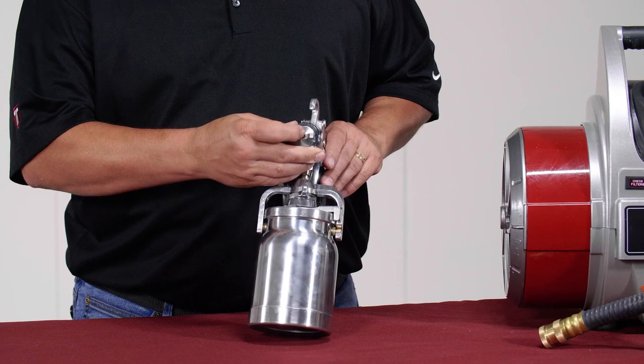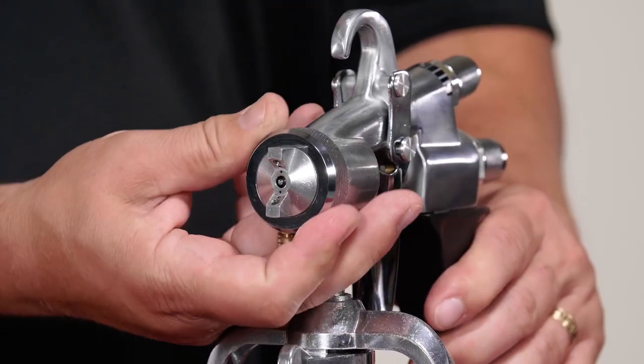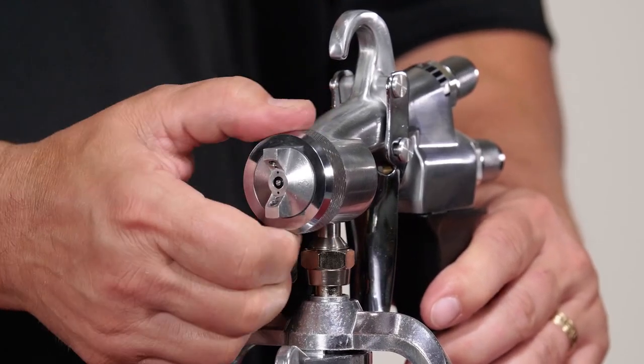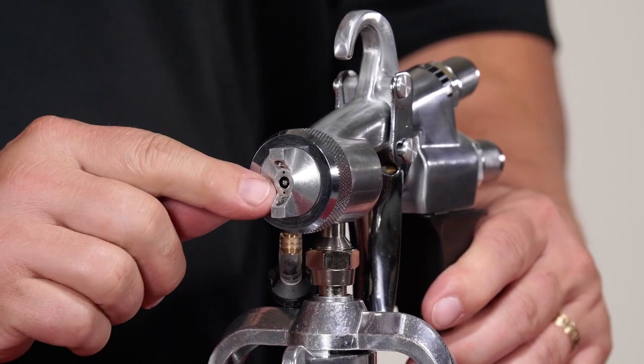The air cap flush with the needle is the starting point for your pattern width. Adjusting it a small amount in or out from center will allow you to finally adjust the pattern.